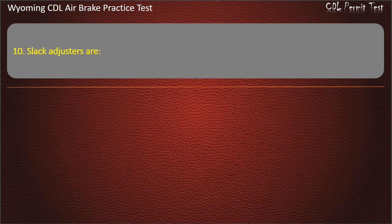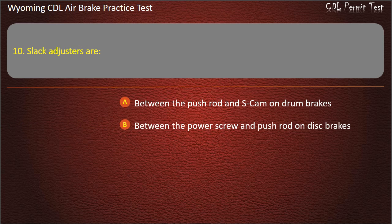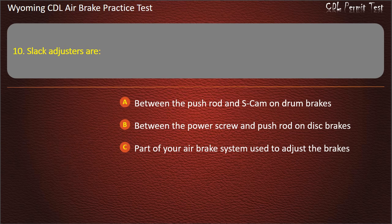Question 10. Slack adjusters are: between the pushrod and S-cam on drum brakes; between the power screw and pushrod on disc brakes; part of your air brake system used to adjust the brakes; all of the above. Answer: All of the above.